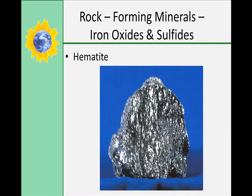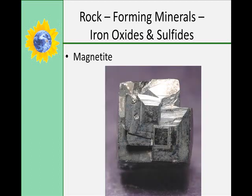Iron oxides and sulfides include other rock-forming minerals. Hematite is the most common iron oxide and is high in iron content. Magnetite is another type, and it is magnetic — thus its name. A common example of that is lodestone, and this is lodestone here. Interestingly, lodestones are sometimes found in the brains of certain animals that migrate — for example, homing pigeons have lodestones in their brains, and they're thought to detect slight variations in the Earth's magnetic field to find their way home.